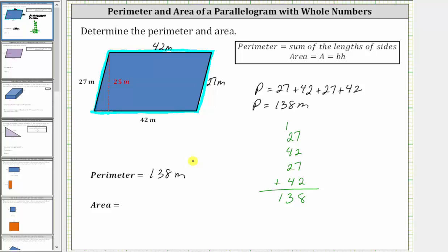And now let's determine the area of the parallelogram. The area of a parallelogram is equal to the base times the height. For the given parallelogram, the base is 42 meters, and the height is 25 meters. And therefore the area is equal to 42 meters times 25 meters.